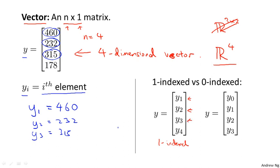where the elements we write as y_1, y_2, y_3, y_4. And this example on the right is an example of a zero index vector...